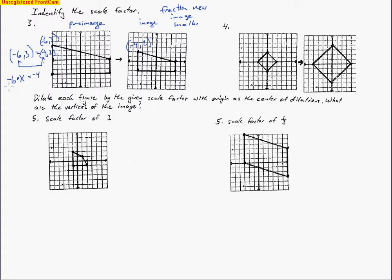I'm going to solve for x by dividing by negative 6, because I'm trying to figure out how they went from negative 6 to negative 4. What I get is the fraction negative 4 over negative 6. I can reduce this by taking out the common factor of 2 from both numbers, and that leaves me with 2 over 3. So 2 over 3 is the scale factor. Notice the negative signs cancel, so it's just 2 thirds.